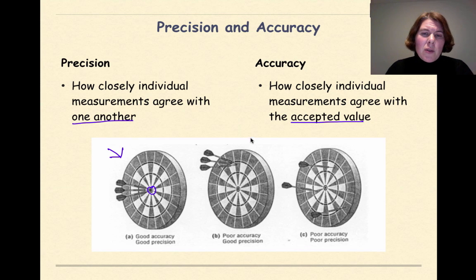In this next example that we see right here, we see poor accuracy because none of the darts are basically hitting our accepted value of the bullseye, but it's pretty precise. So when we look at this particular diagram, they're very precise because they're all hitting the same spot, but they're not very accurate because they're not hitting the bullseye.